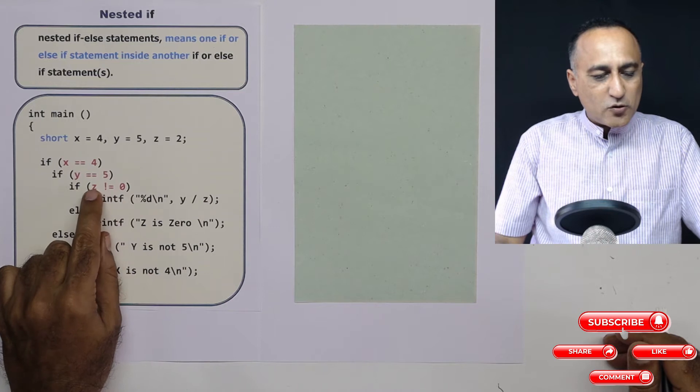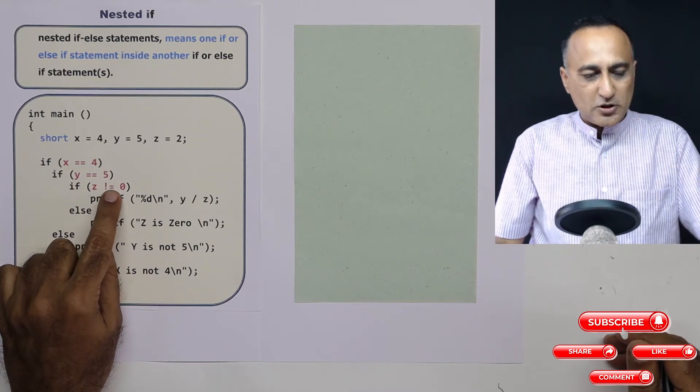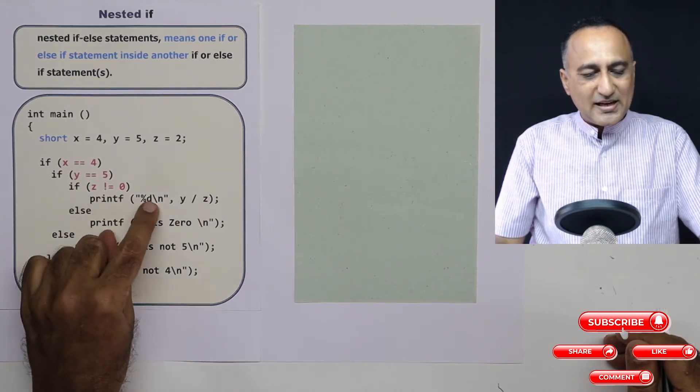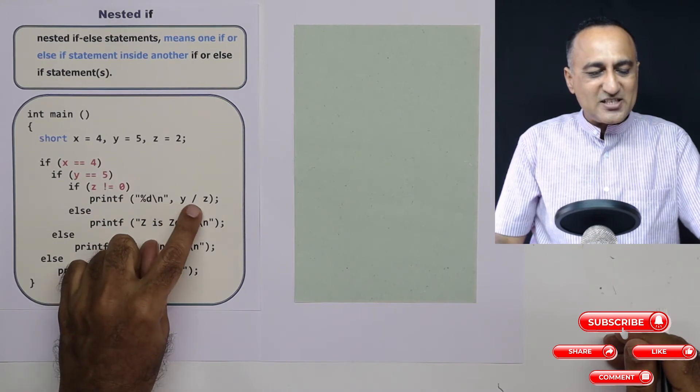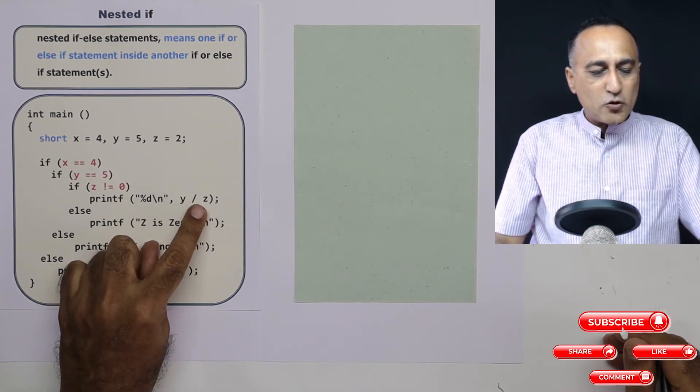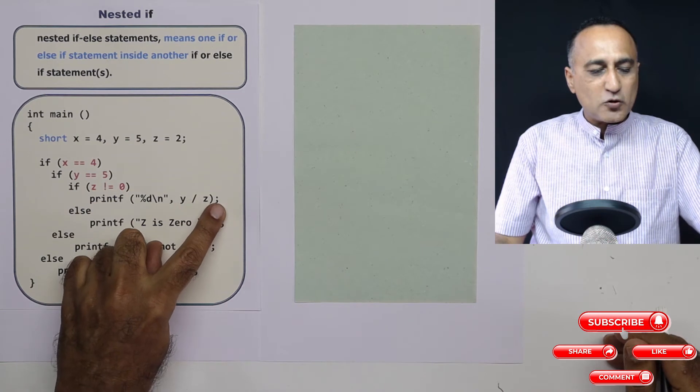Since this is true it will come to this one. If z not equal to 0, 2 is definitely not equal to 0. So what it will do is it will print y upon z. Since it's an integer division, 5 upon 2 is going to be 2. The output of this print is going to be 2.